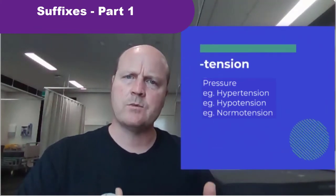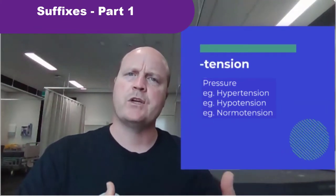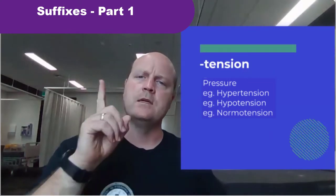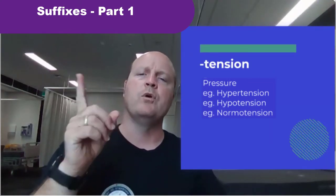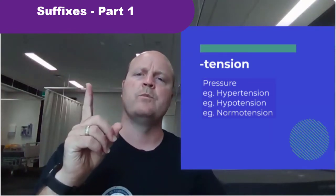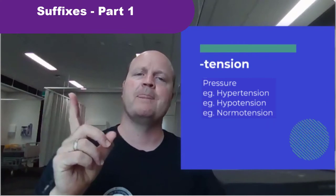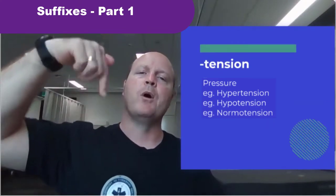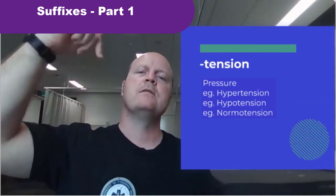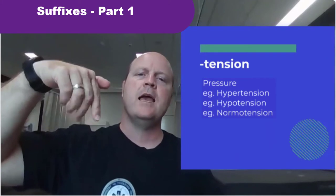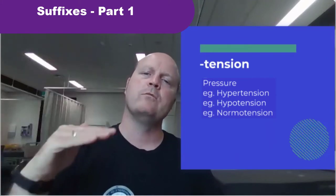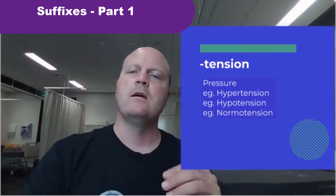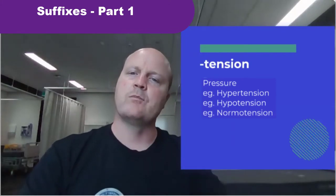'-Tension', when we see this one, it means pressure. So remember hyper is more, so hypertension would be increased blood pressure. Hypo means low, so hypotension is decreased blood pressure. And normotension would be normal blood pressure.